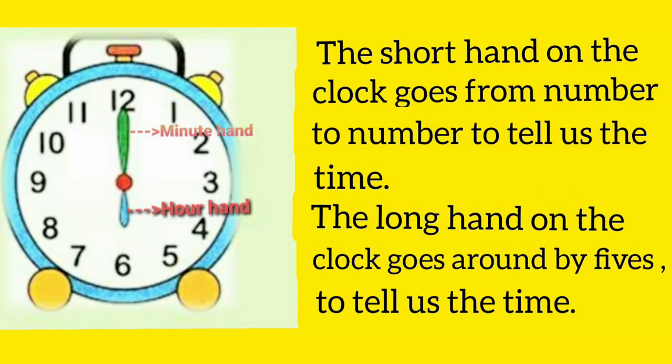The short hand on the clock goes from number to number to tell us the time. The long hand on the clock goes around by fives to tell us the time.